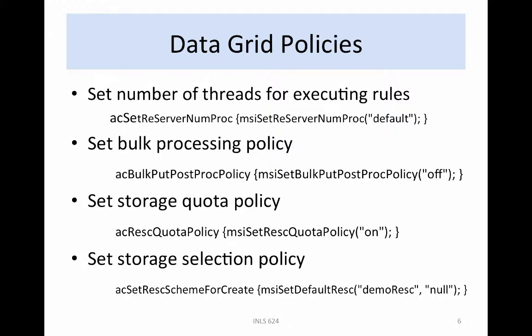Policies for naming additional properties of the data grid are shown here. A policy controls the number of simultaneous threads that can be used for executing rules; the default number is 4, making it possible for three other rules to execute while a long-running rule is being processed. The bulk processing policy is an optimization for bulk import of data into the data grid, turning off the ACPostProcForPut processing steps to load files more efficiently. Storage quotas are controlled by a policy and can be turned on or off. For the Lifetime Library, a quota of 500 gigabytes is set for every user; since this includes storage for replicas, the effective quota is 250 gigabytes per user.